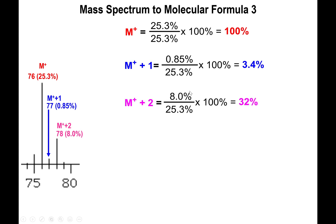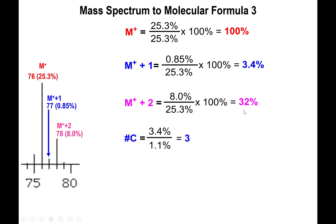Dividing by 25.3 and multiplying by 100 gives us a rescaled M+2 value of 32%. Notice that if you hadn't rescaled, you might mistakenly say 'that's a multiple of four, so this looks like sulfur.' But after rescaling, the M+2 value of 32% looks much more like a chlorine atom.